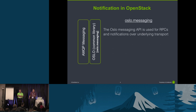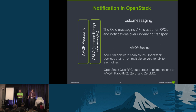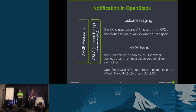The Oslo messaging API is used for RPCs and notifications over the underlying transport, whether that be RabbitMQ, Qpid, or ZeroMQ. The AMQP service is the middleware that enables OpenStack services running on multiple servers to communicate with one another. It supports three implementations today: RabbitMQ, Qpid, and ZeroMQ.